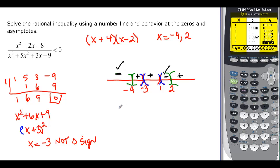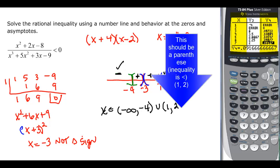So we have from negative infinity up to negative 4, including negative 4. x is an element of union. We have 1, but notice it's a parenthesis because that was an asymptote. So parenthesis 1, comma 2, parenthesis.